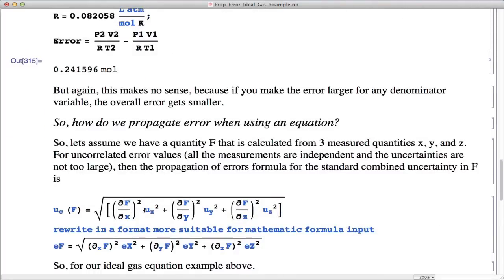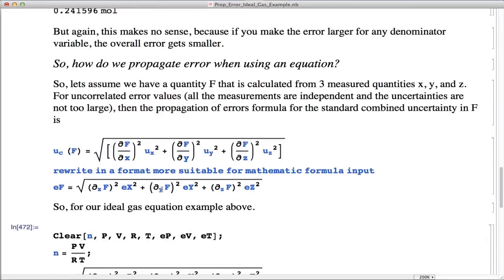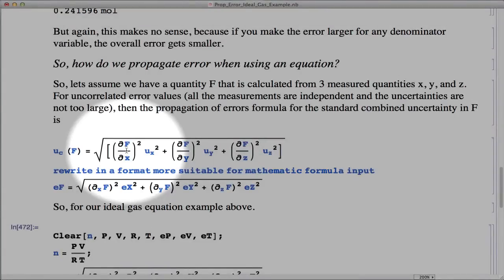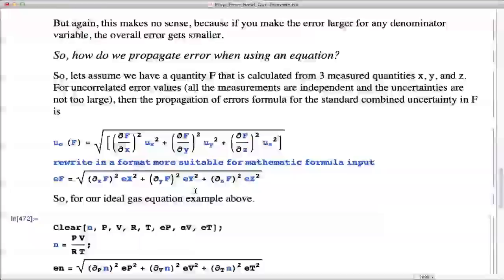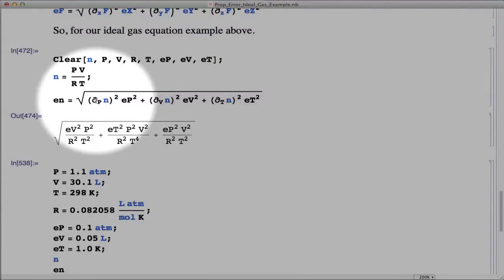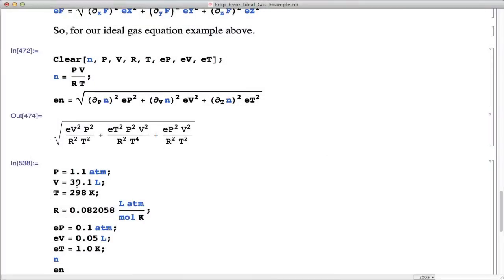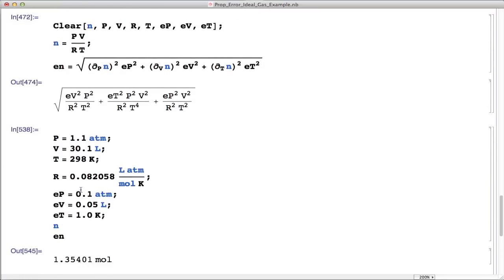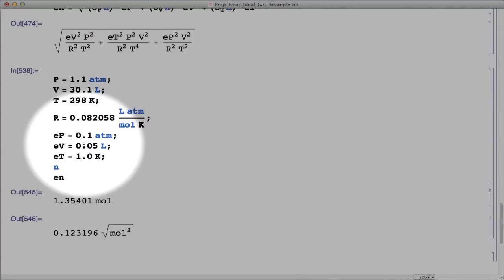So again, when we propagate error, we take the partial in a function with respect to each independent variable, we square that, we multiply it by the square of the error. This is how it's easier to write in Mathematica form, where this is basically the same thing. So this is the partial in the function with respect to x, this is just how Mathematica writes it. And so I've done that for the exact one we've talked about here, which is the partial with respect to pressure, volume, and temperature. So it's taken the partial with respect to each of those variables, squared them all for me, done them all out for me here. And now I just substitute what all the values are, so we know the pressure, volume, and temperature, the gas constant, and then we know the error in the pressure, volume, and temperature.